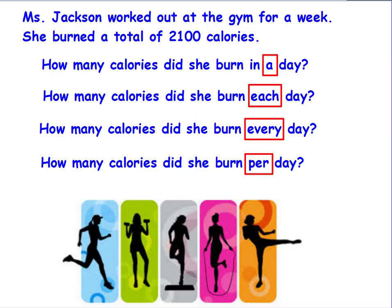Let's look at this problem. Ms. Jackson worked out at the gym for a week. She burned a total of 2,100 calories. The next part is all asking the exact same question: How many calories did she burn a day? How many calories did she burn each day? How many calories did she burn every day? How many calories did she burn per day? Every one of these words equals one.